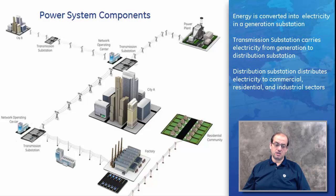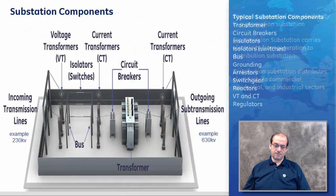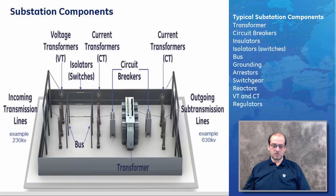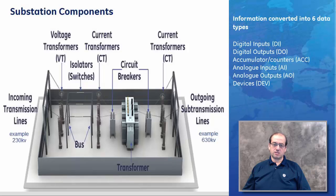In a substation we have transformers, circuit breakers, insulators, isolators, bus grounding, arresters, switchgear, reactors, VTs and CTs, and regulators. All of this information is normally converted into one of six types: a digital input, a digital output, a counter or accumulator, an analog input, an analog output, or a device.